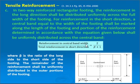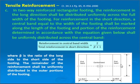The reinforcement in the central band width divided by total reinforcement in the short direction equals 2/(β + 1), where β is the ratio of the long side to the short side of the footing. The spacing is less in the central band and more in the end band.